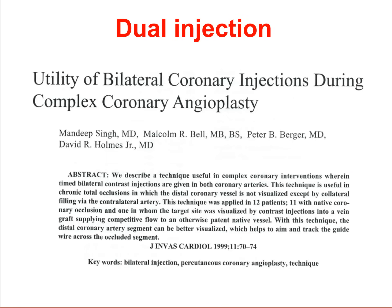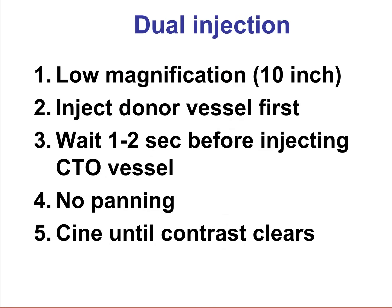How can we assess those characteristics? The one key component is to do the dual injection. Dual injection was first described by Singh and Holmes from the Mayo Clinic about 15 years ago. However, it is critical to be able to understand where the equipment goes into when CTO interventions are being performed.